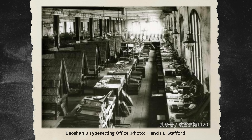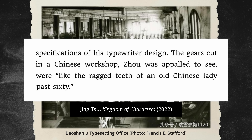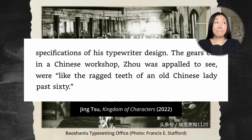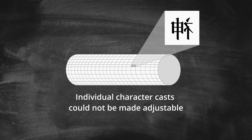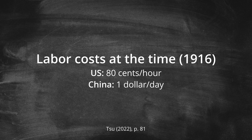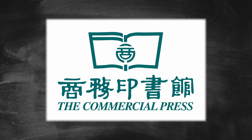However, he regretted his decision almost as soon as he set foot in the typewriter workshops in China. According to Zhou, the gears being cut were like the ragged teeth of an old Chinese lady past 60 — not precise like the workmanship he was used to in the United States. After visiting 10 workshops in 10 months, Zhou could not find anyone that could faithfully reproduce his original prototype. Specifically, he couldn't find anyone that could make the character casts on the cylinders detachable. He decided to appeal to the Commercial Press to let him go back to the US to manufacture the typewriter there, but the Commercial Press decided that offshoring manufacturing was not an economical choice. In the end, Zhou was severed from his contract and the blueprints now belonged to the Commercial Press.